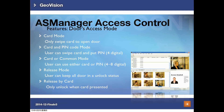There are different access modes when setting the access schedule for doors. Card mode allows users to swipe cards only. Card and PIN code mode requires users to swipe and input a 4-digit PIN. Card or common mode lets users use either their card or just the PIN code. Release mode lets users swipe to keep all doors in unlock status. Release by card mode works in combination with release mode — only when a card is swiped will the door enter release mode.